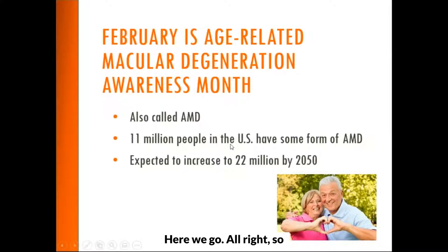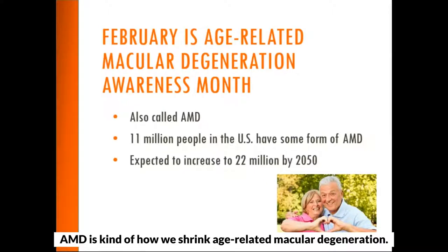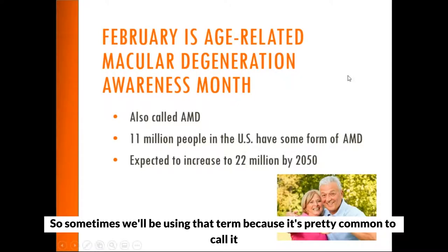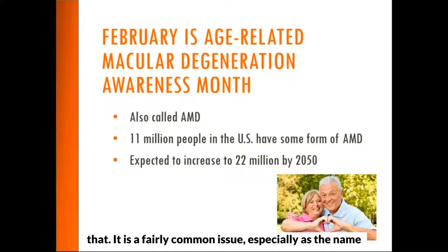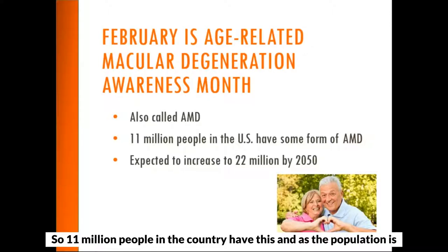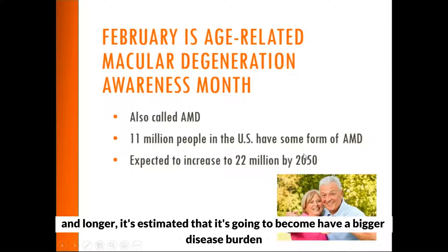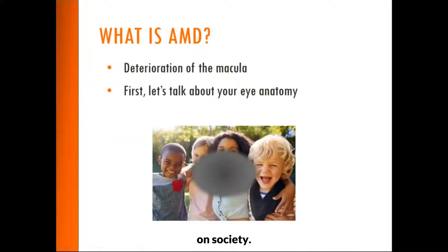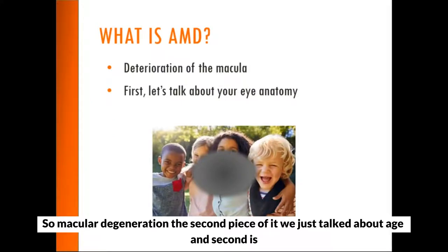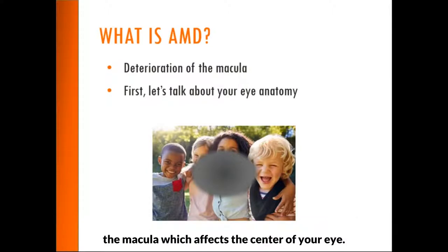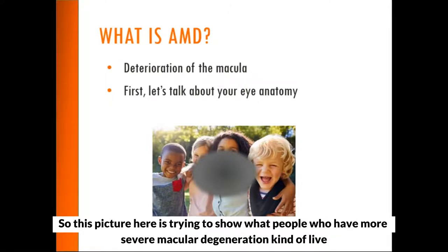AMD is how we abbreviate age-related macular degeneration, so sometimes we'll be using that term. It is a fairly common issue, especially as the name implies — as you get older, its prevalence becomes higher. 11 million people in the country have this, and as the population continues to live longer, it's estimated that it's going to have a bigger disease burden on society. The macula affects the center of your eyes, and this picture is trying to show what people who have more severe macular degeneration kind of live with.